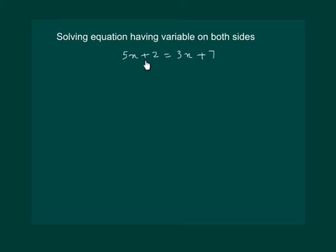So on transporting plus 2, it becomes minus 2. Similarly on transporting 3x to the other side of the equality, plus 3x becomes minus 3x. And now our equation is same as 2x is equal to 5.